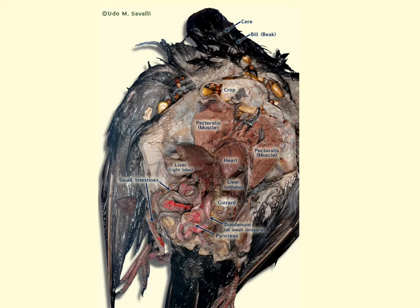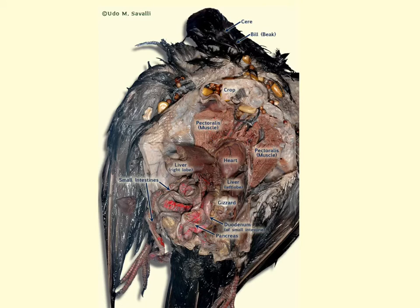As we begin reviewing the internal anatomy of the pigeon, you'll notice these large pectoralis muscles, which are attached to the keel. The keel is an extension from the sternum, running along the midline and extending outward perpendicular to the plane of the ribs. The keel provides an anchor to which these large pectoralis muscles attach, providing leverage for flight.